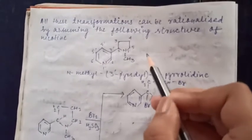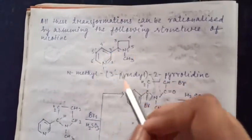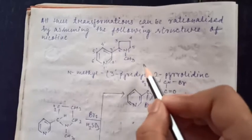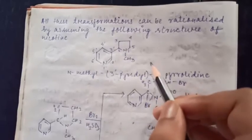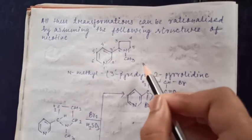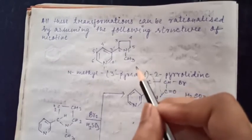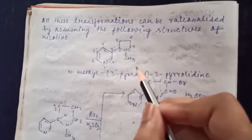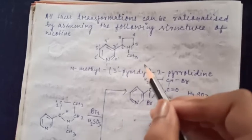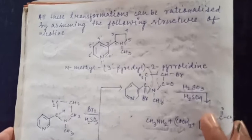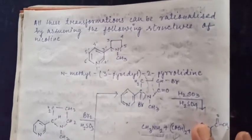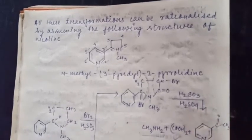So in this way we can say that the structure of nicotine is this one, because this follows all our facts. So that's why the structure of nicotine is assumed to be this. And further, the structure of this nicotine is confirmed by synthesis of nicotine, which we will see in next lesson. I hope this lesson is clear to you. Thank you. Have a good day.